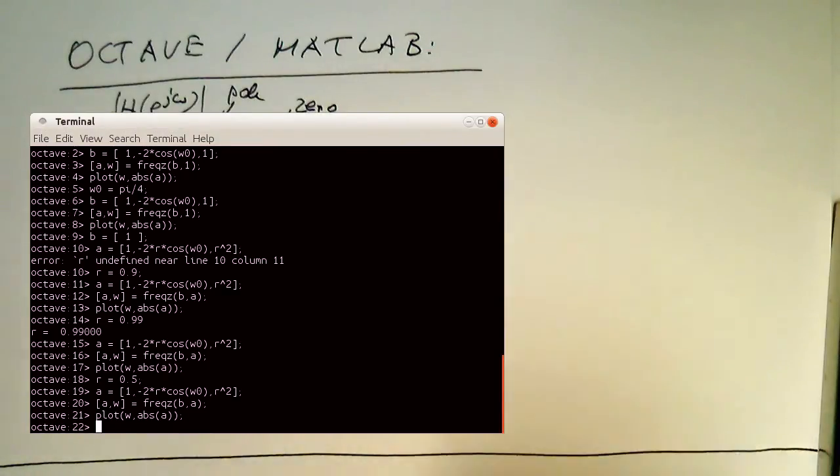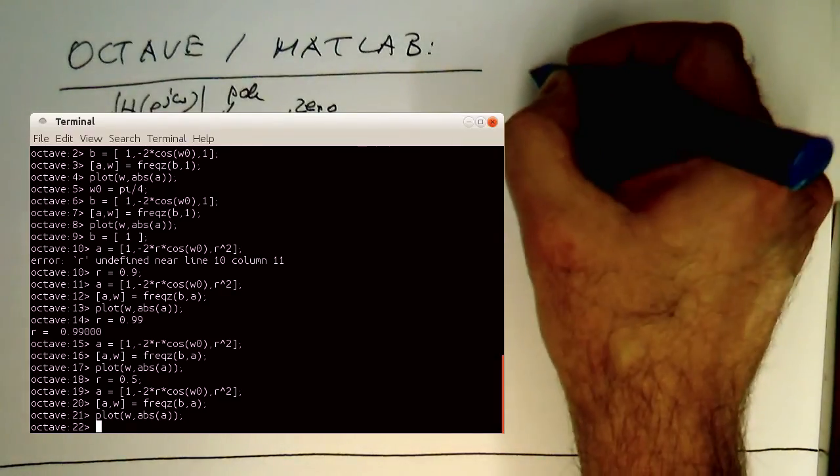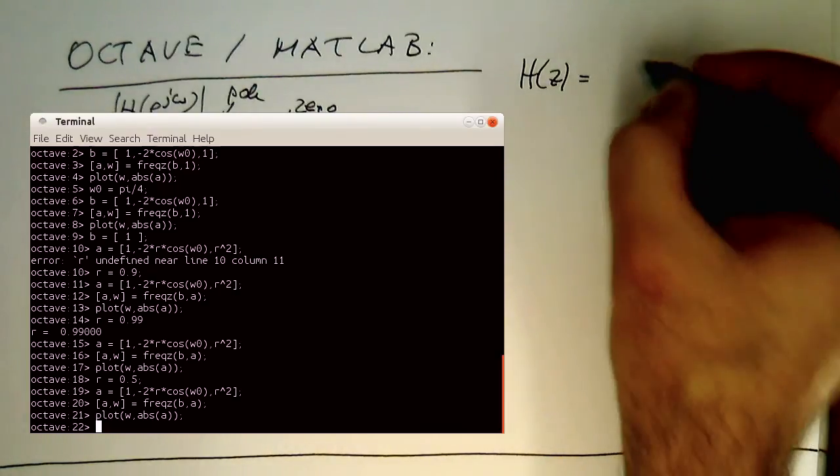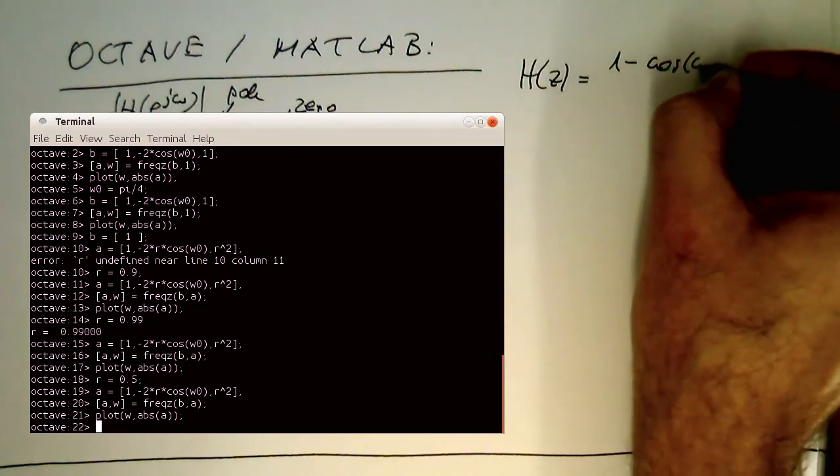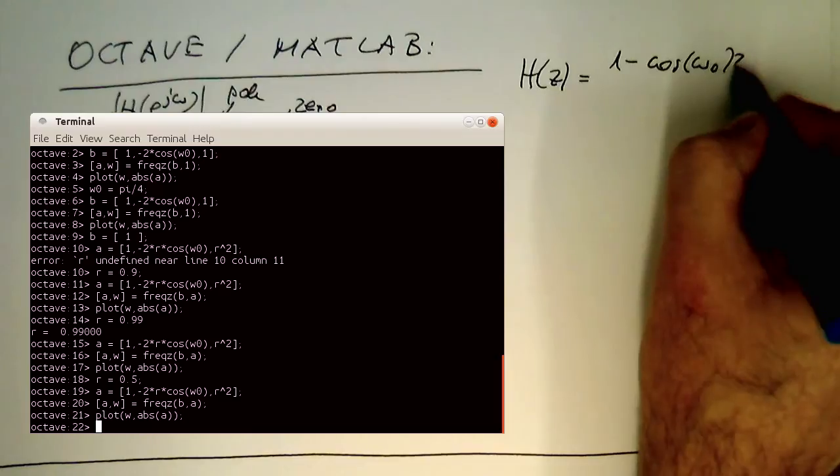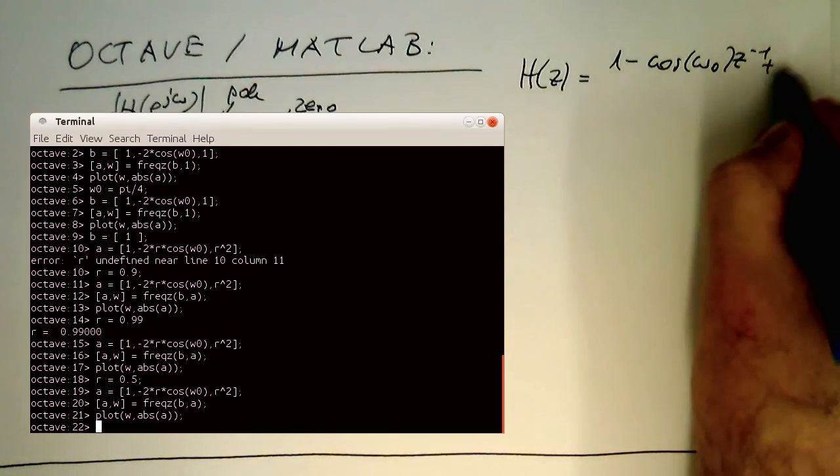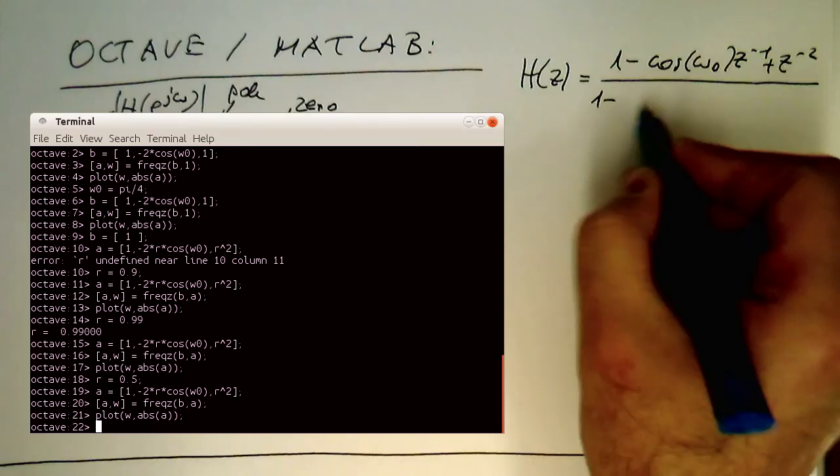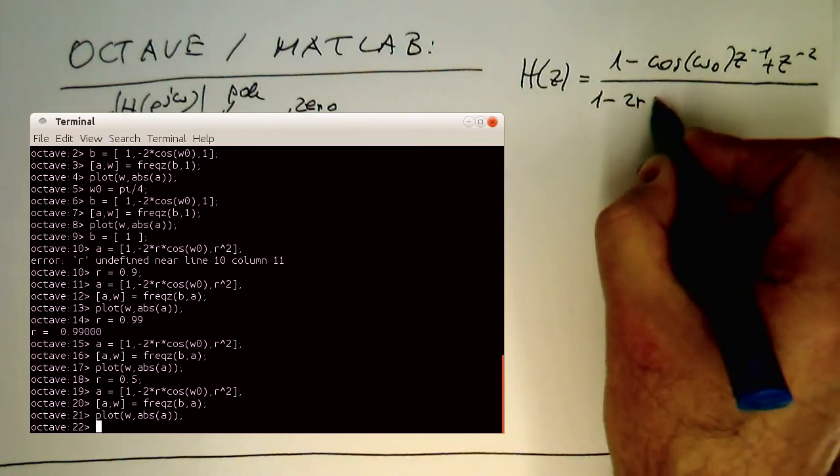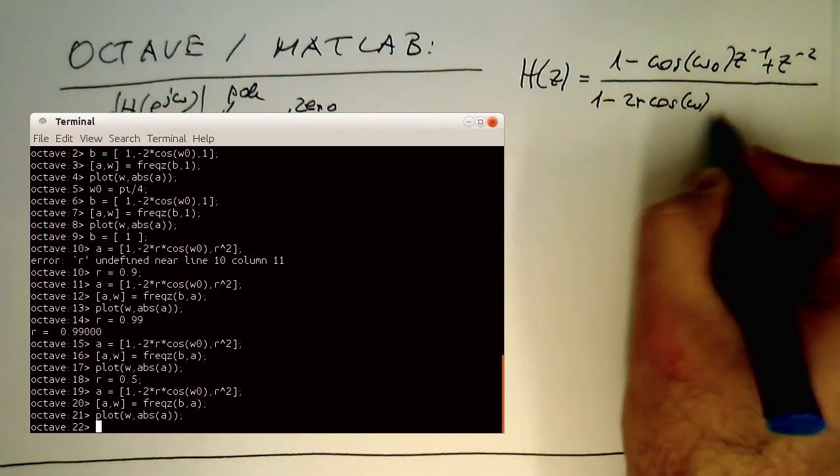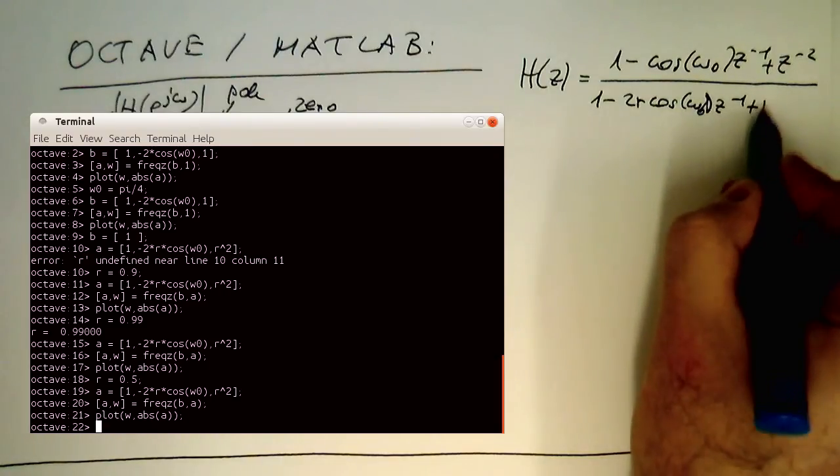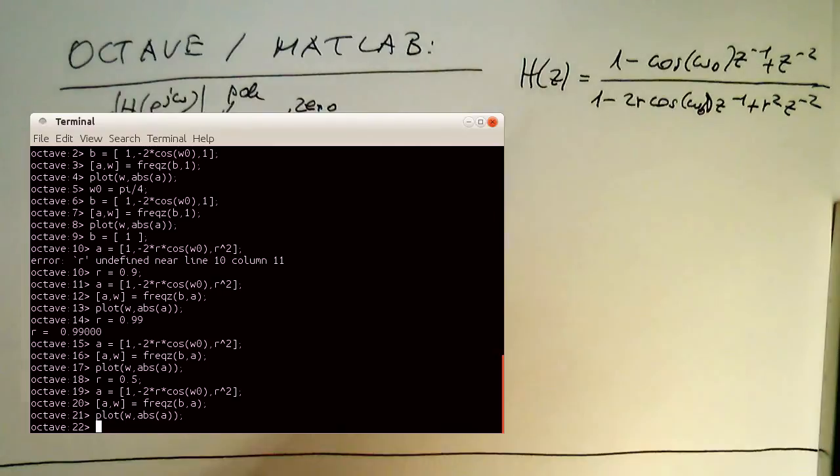Okay, let's write down the transfer function here on the side. And we have it again here that we see it while I'm typing this in here. So H of z is 1 minus 2 cos omega zero z to minus 1 plus z to minus 2 divided by 1 minus 2 R cos omega zero z to minus 1 plus R square z to minus 2.